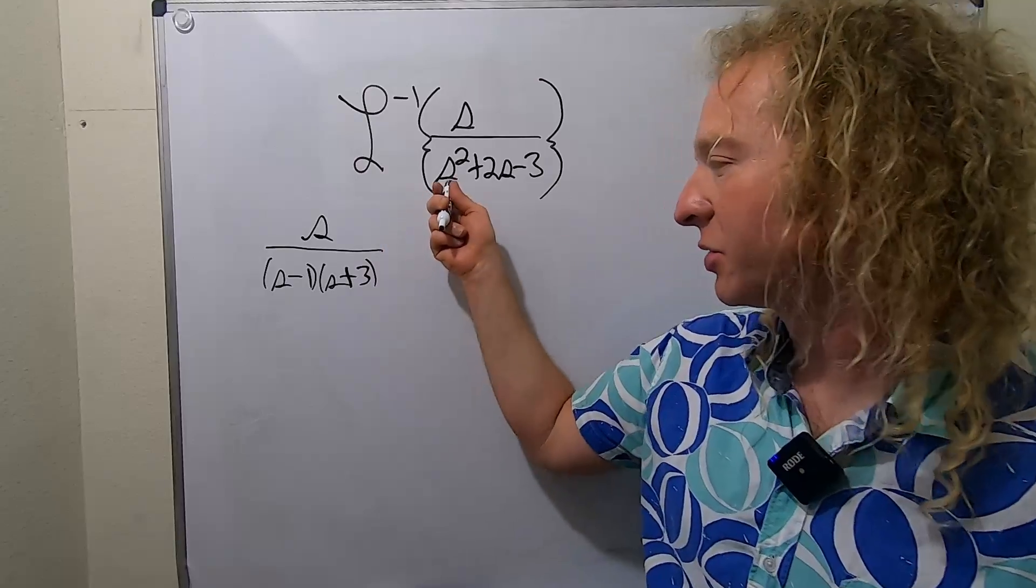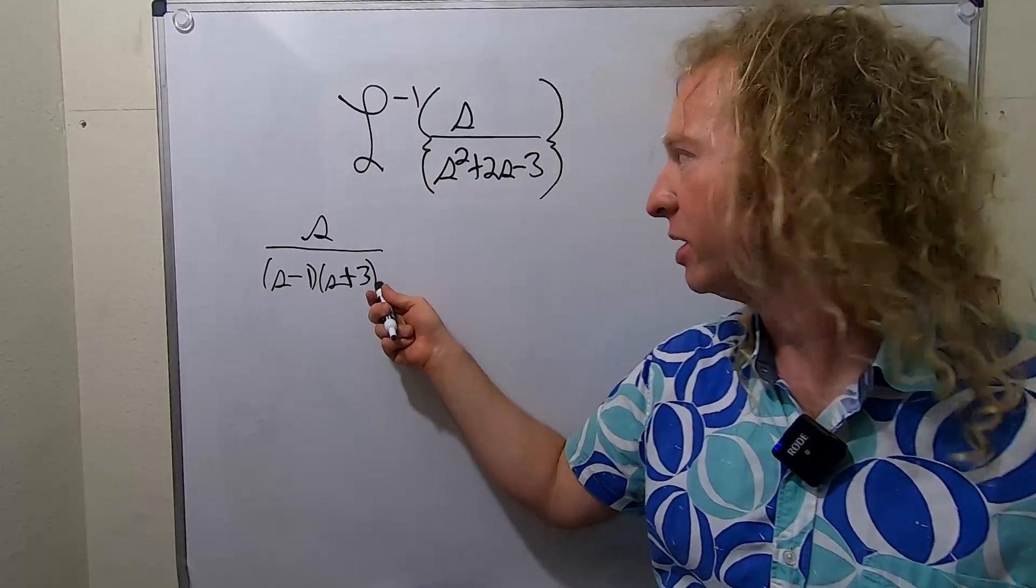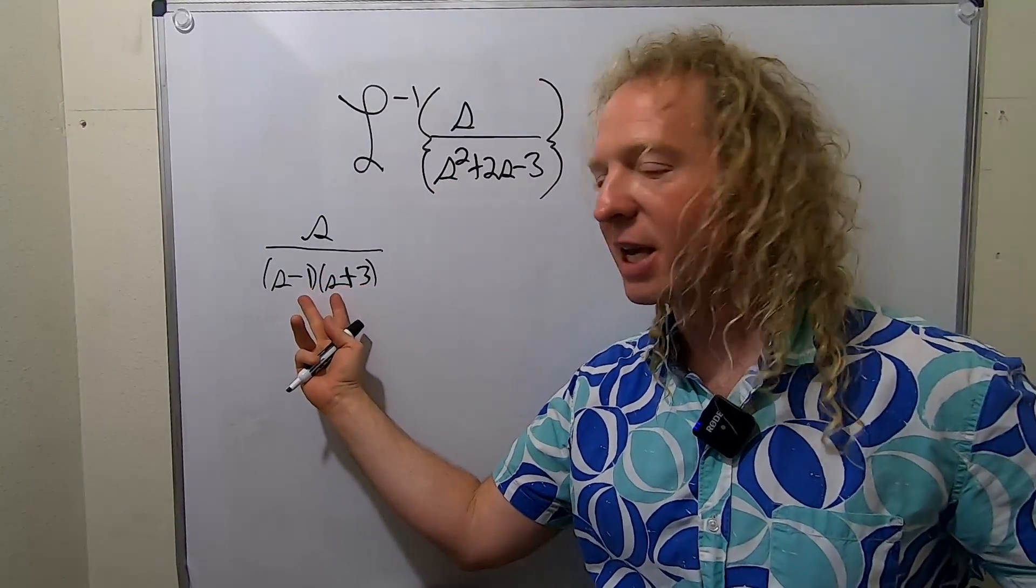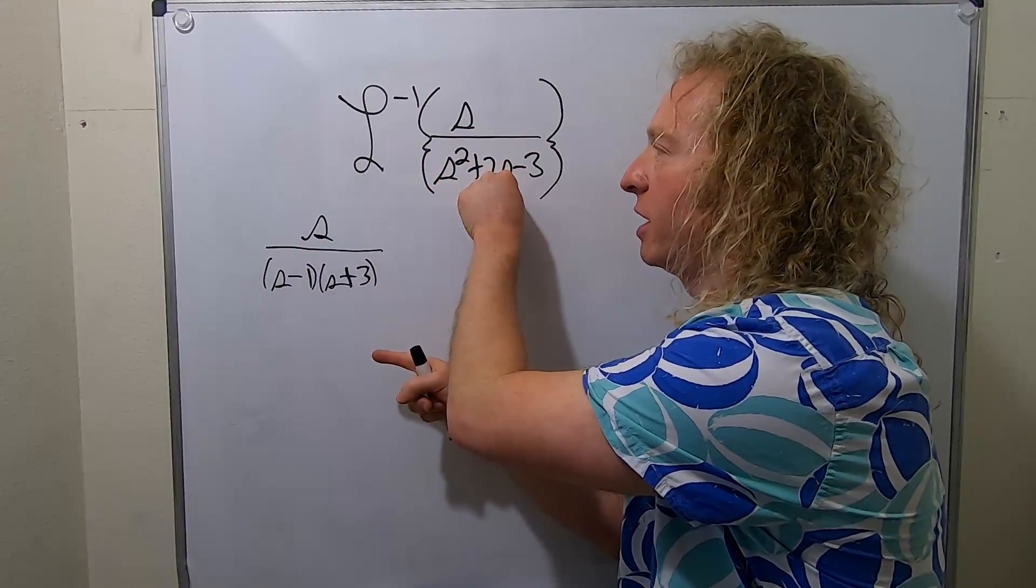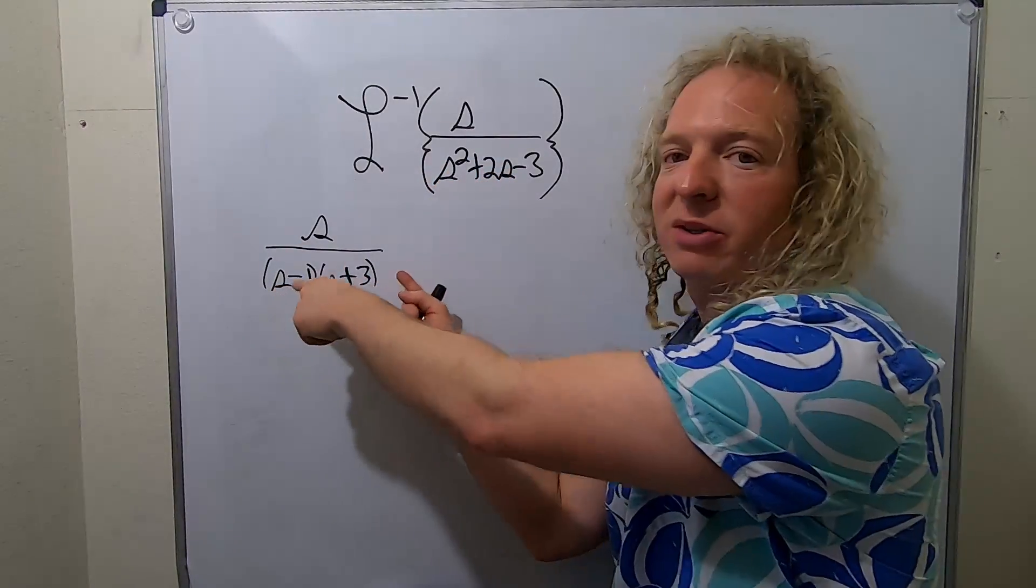Let's check. s times s is s squared, negative 1 times 3 is negative 3, negative s plus 3s gives you negative 2s. So the inside and the outside add to the middle.